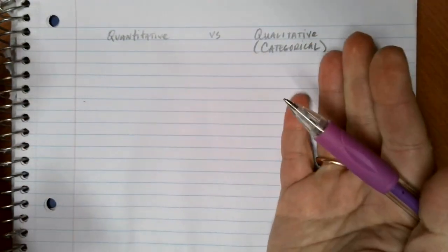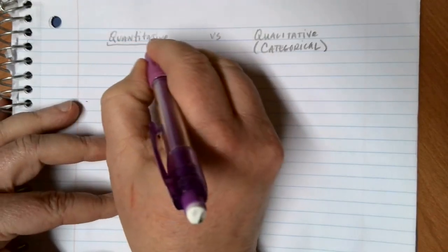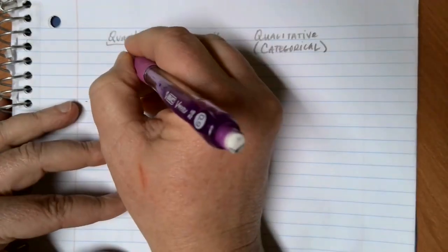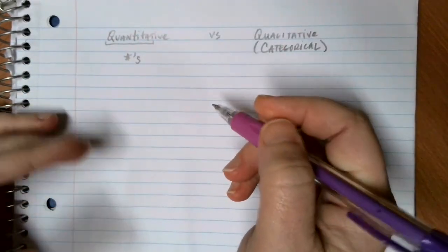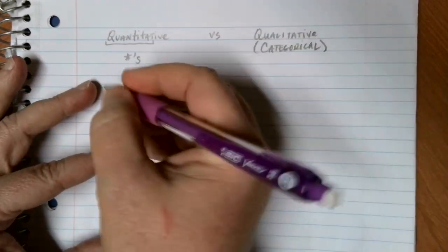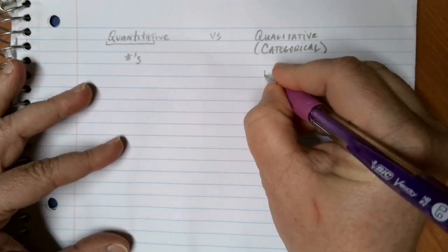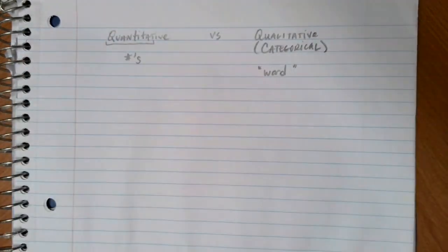As a kind of rule, 95% of the time this is true: quantitative data has the word quantity in it and it's going to be related to numbers. So if you're collecting data and the answer response is a number, it's almost always going to be quantitative. If you're collecting and your answer is a word choice of some type, then you're looking at qualitative or categorical data.